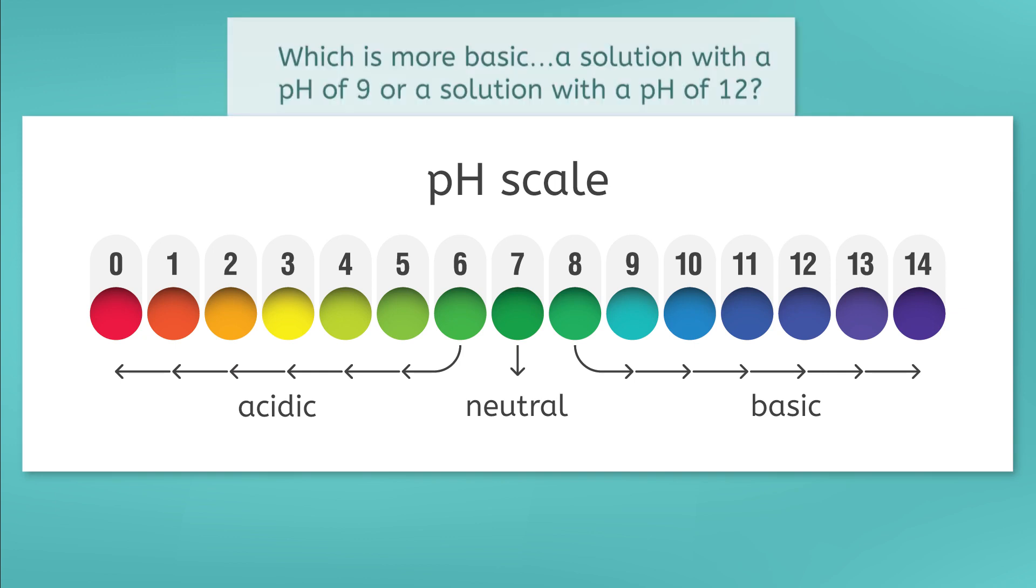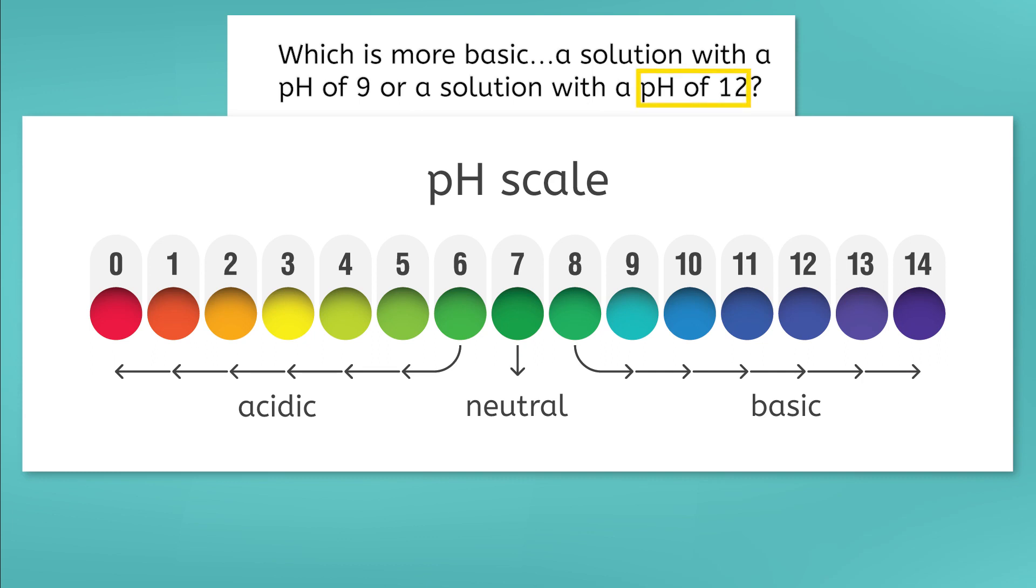If I have two basic solutions, one with a pH of 9 and one with a pH of 12, which do you think would be more basic and why? The solution with a pH of 12 would be more basic because it would have more OH⁻ ions in the solution.